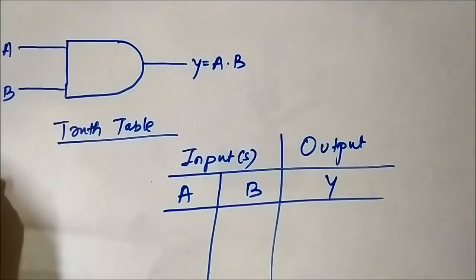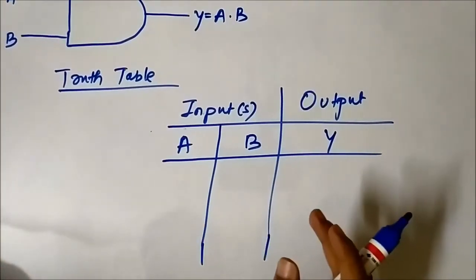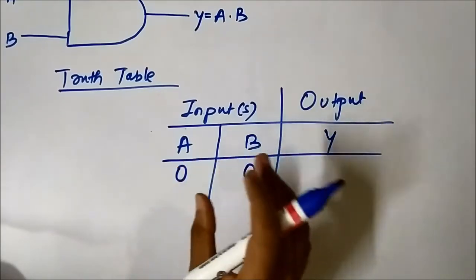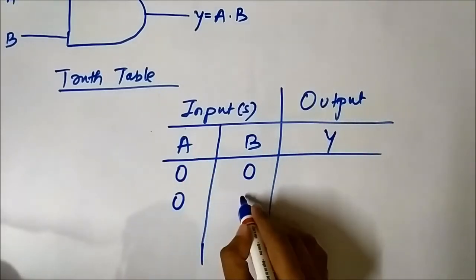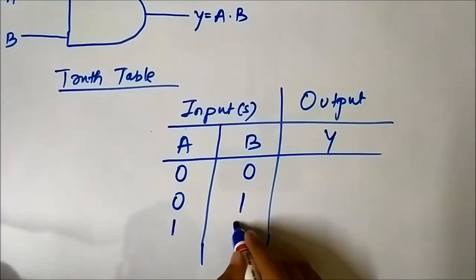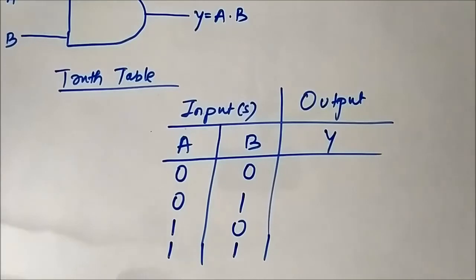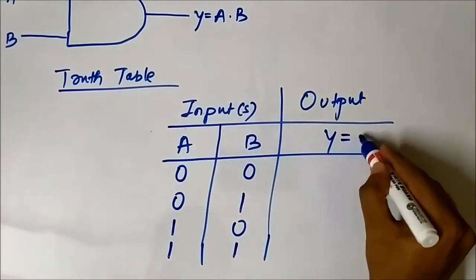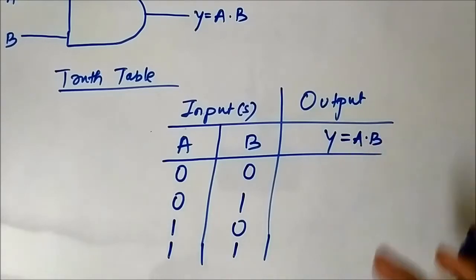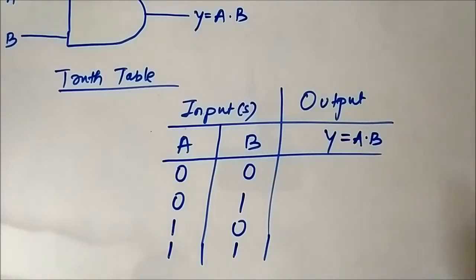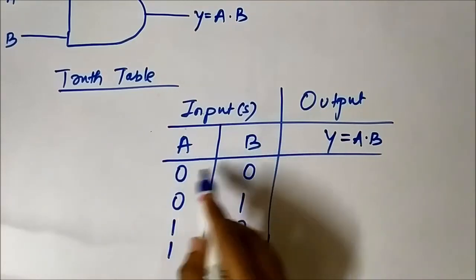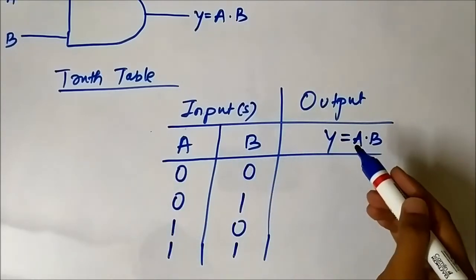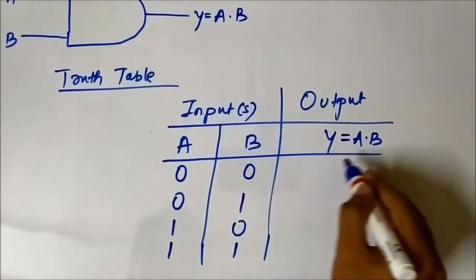Since there are two inputs, there are four possible input combinations. When A=0 and B=0, both are logic low. When A=0 and B=1. When A=1 and B=0. And when A=1 and B=1. Since Y equals A dot B, when both inputs are low, 0 times 0 equals 0 by binary multiplication rules. When A=0 and B=1, the output is also 0.